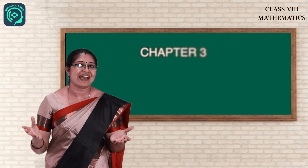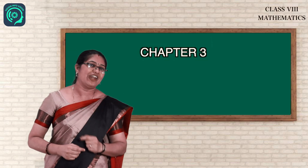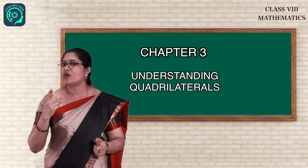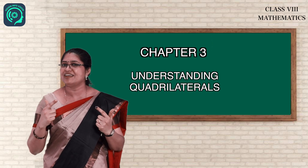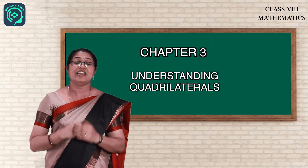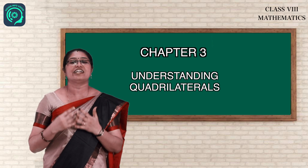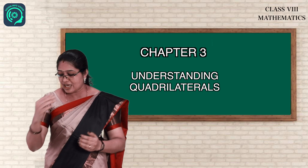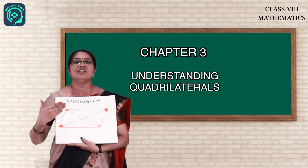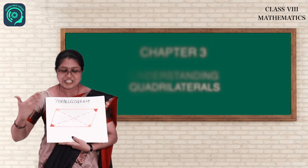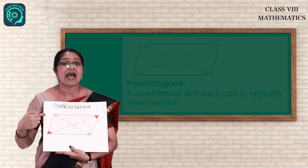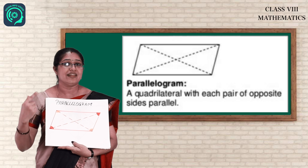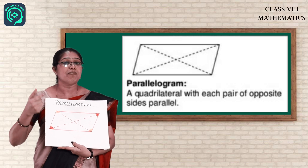Hi children, welcome back. I think you all enjoyed the last session, so let us continue with quadrilateral. What is a quadrilateral, children? Do you remember? Yes, four sides. Now let us see the different types of quadrilateral and its properties. I will show the pictures. The first one is parallelogram.